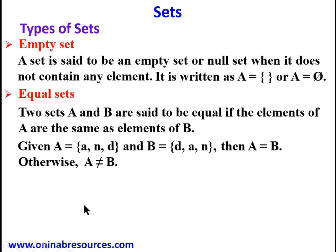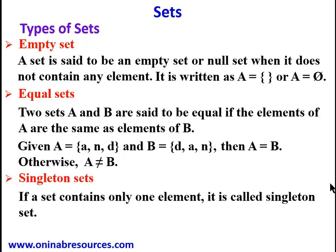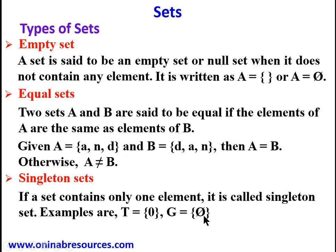We go to singleton sets. If a set contains only one element, it is called a singleton set. For example, T = {0} — the only element is zero, so T is a singleton. G = {i} — so G is also a singleton, and so on.